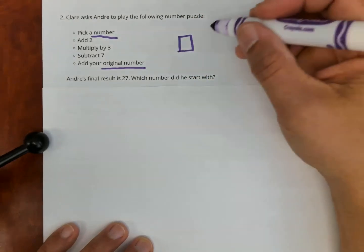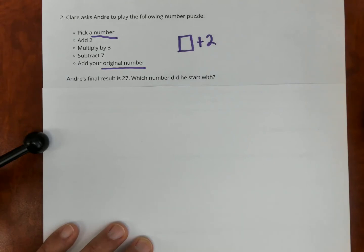I'm going to write the equation of what's happening here. So I pick my number. Number, that's my missing number, plus two. Then multiply by three.